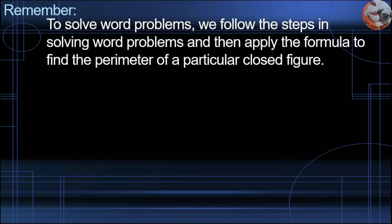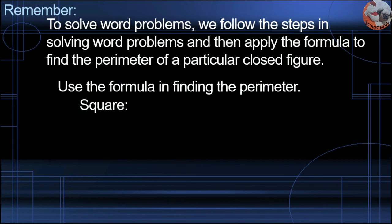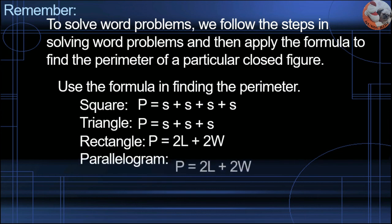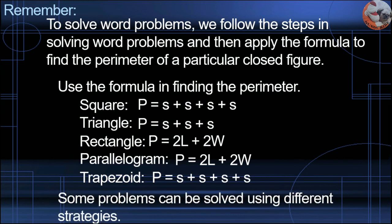Remember: to solve word problems, follow the steps and apply the formula to find the perimeter of a particular closed figure. Formulas — Square: P = S + S + S + S; Triangle: P = S + S + S; Rectangle: P = 2L + 2W; Parallelogram: P = 2L + 2W; Trapezoid: P = S + S + S + S. Some problems can be solved using different strategies.